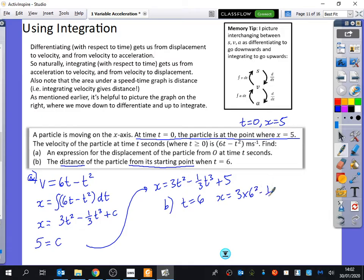Someone tell me what I need to do. Substitute six in for t. So we get three times six squared minus a third times six cubed plus five. That's 41 metres when t equals 6. So we just need to find out the distance between its starting point and this. Where did it start? It started at five. So the distance is 41 take away 5, which is 36 metres.